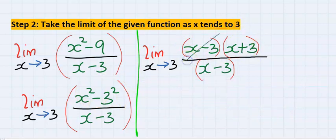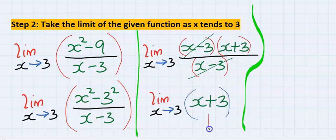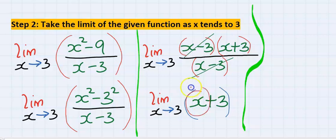Next, x minus 3 will cancel x minus 3. Now, you are left with only x plus 3. Next, instead of x, you now put 3, and you now have 6.